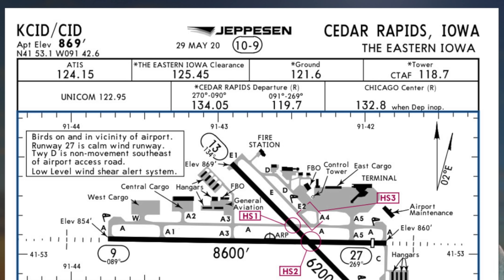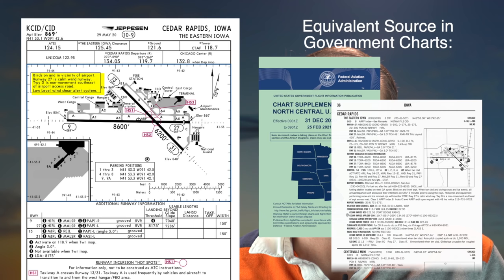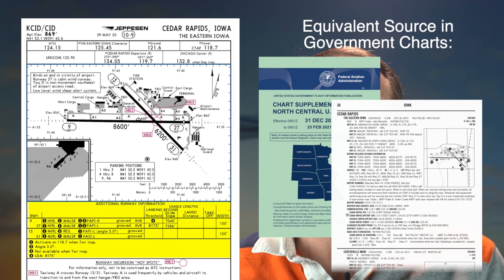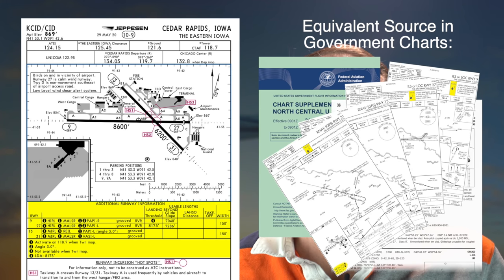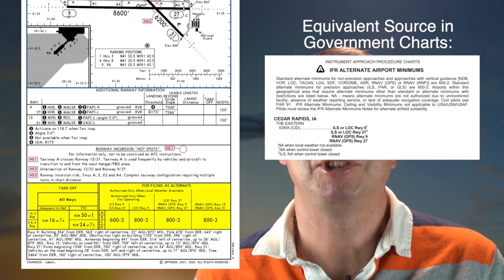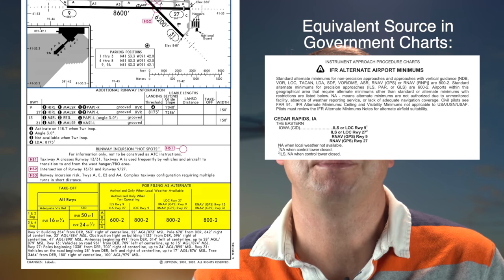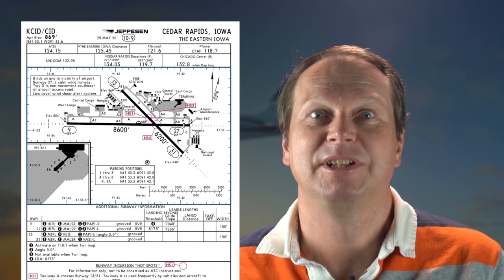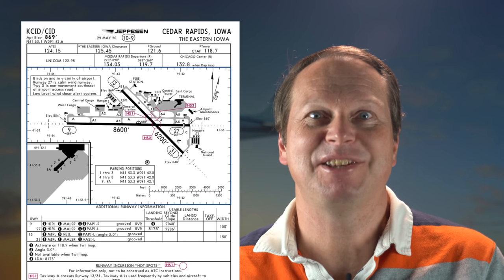If you look at the airport diagram from my home airport, Cedar Rapids, Iowa, you can see it combines information from a variety of sources: a summary of airport remarks from the chart supplement book, runway and approach light information for the whole airport — for which I'd otherwise have to look at multiple separate approach charts or the chart supplement — takeoff minimums and alternate minimums, which are published in a different section of the government approach procedures book, and obstacle notes and obstacle departure procedures, which the government puts in yet another section. Jeppesen combines this all in one place, and that's very practical.